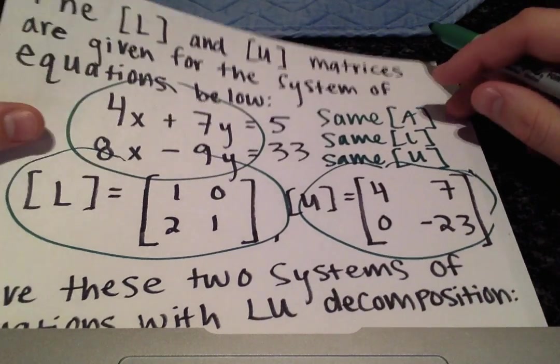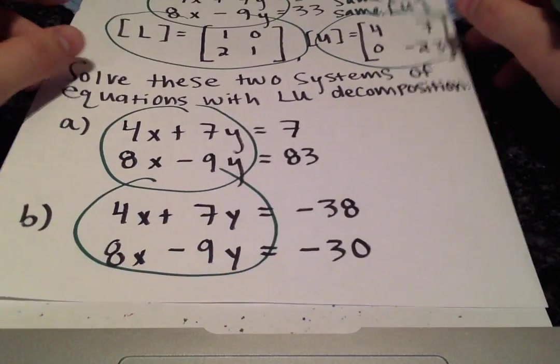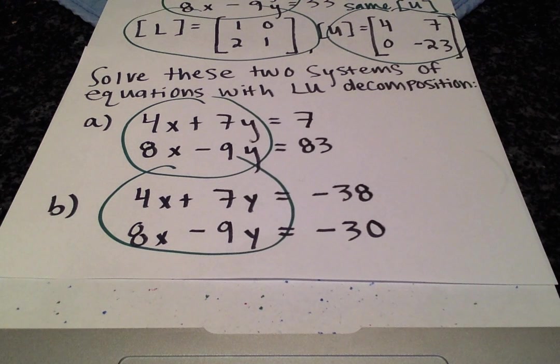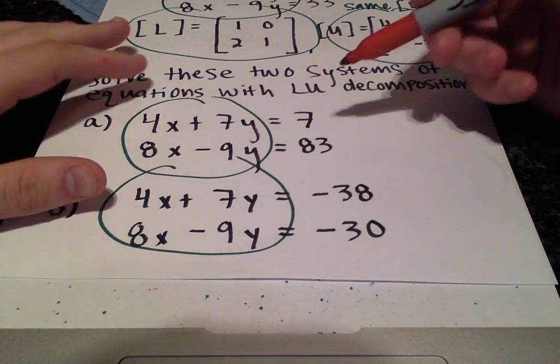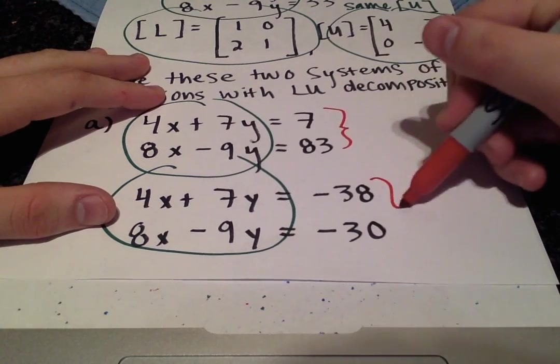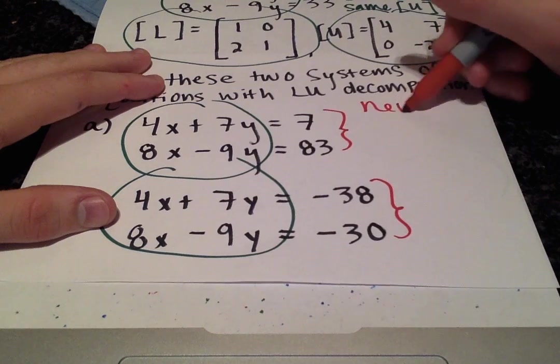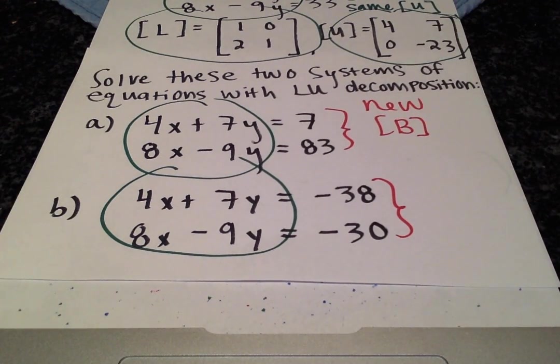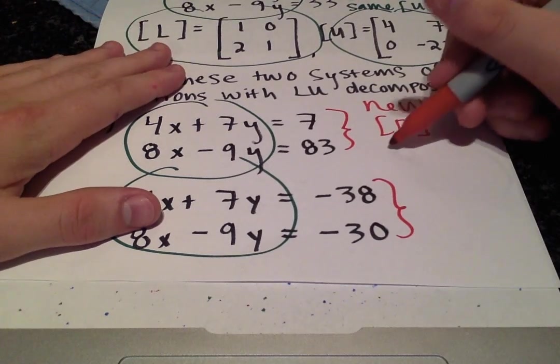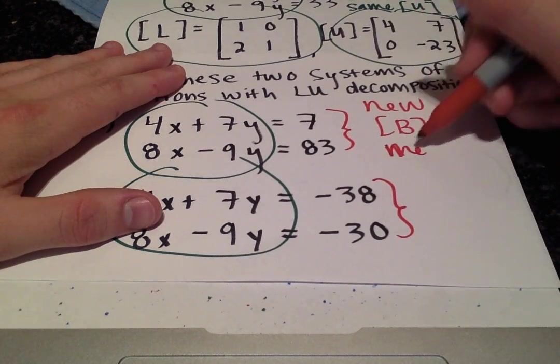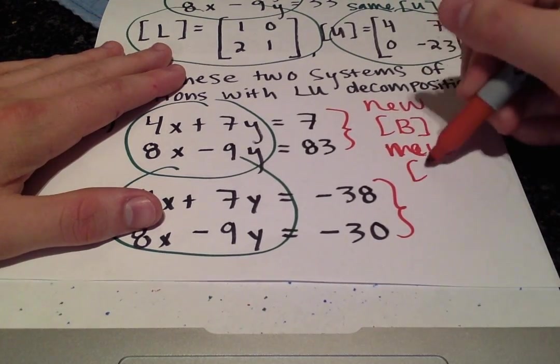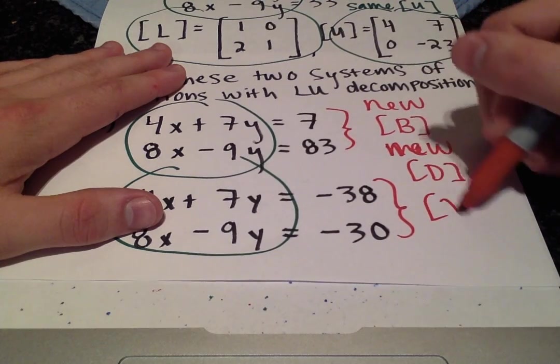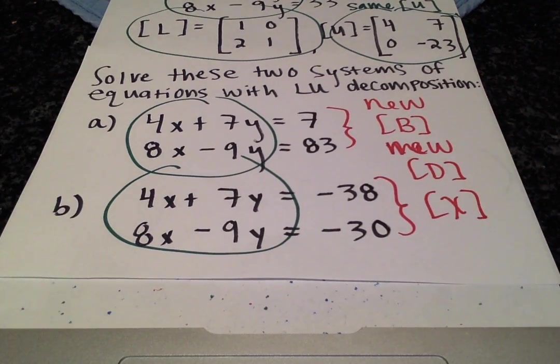That saves us a lot of trouble when solving these two new system of equations. But what is different with these two system of equations they want us to solve for? The right-hand side. That means we'll have new B vectors. And if B is different, that means we'll also have new D and X vectors.